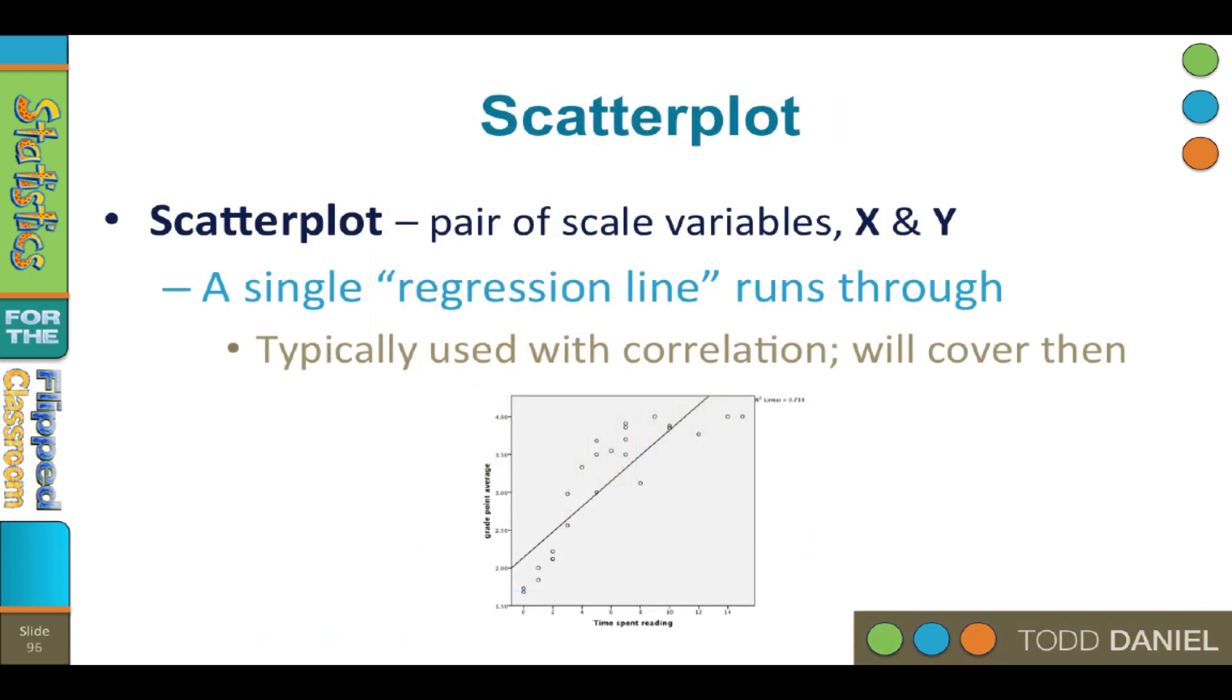Now there's another type of graph called a scatter plot that uses dots. A scatter plot is a type of graph used for correlation and regression, and scatter plots are used to show the relationship between two variables, not frequency as with a frequency polygon. A pair of scale variables, x and y, are plotted on their respective axes. A single straight line, called a regression line, runs through the middle of the data points to demonstrate the strength and the direction of the relationship between the variables. We will learn about scatter plots when we study correlation.